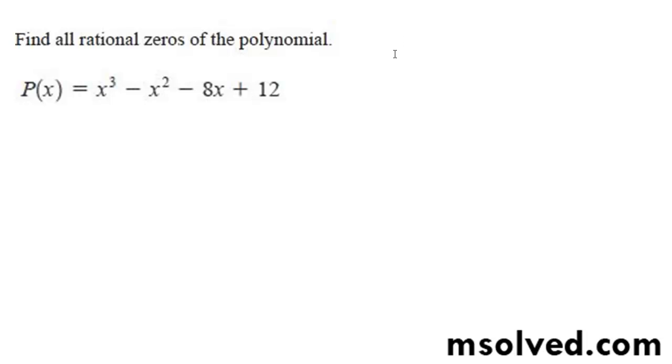Find all rational zeros for this polynomial. I am looking at the constant here, so factors of that are plus or minus 1, plus or minus 2, plus or minus 3, plus or minus 4, plus or minus 6, and plus or minus 12.